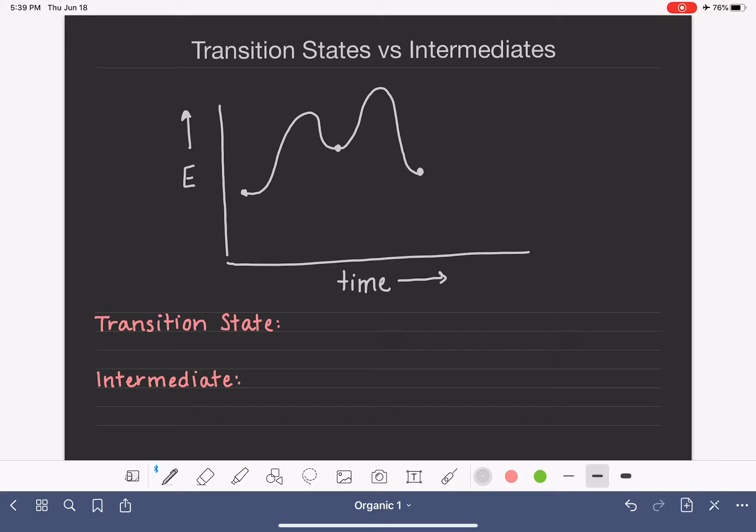The number of steps here depends on the reaction. So we'll make this one have one more step and then it ends. Each one of these bumps in the diagram represents a step, a single step in the reaction.